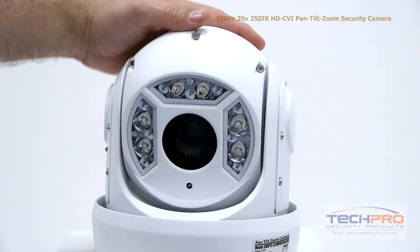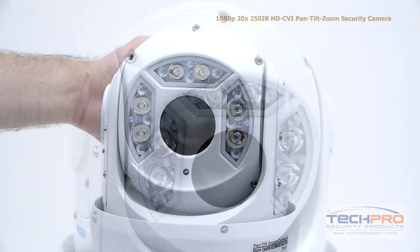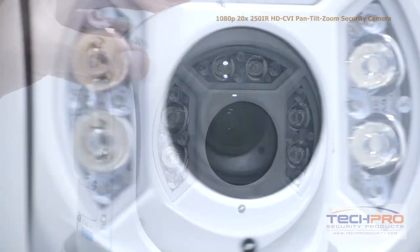This PTZ camera can get up to 20x optical zoom, has a 1/3 inch Exmor CMOS image sensor, can see clearly up to 250 feet in total darkness, and has a full 360-degree rotation.